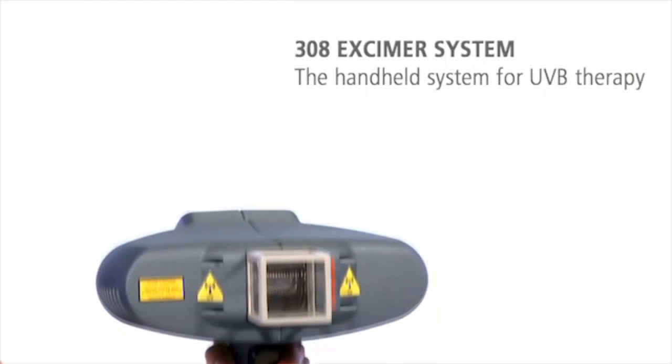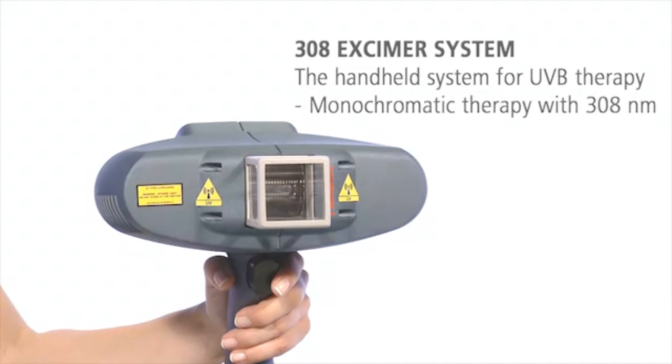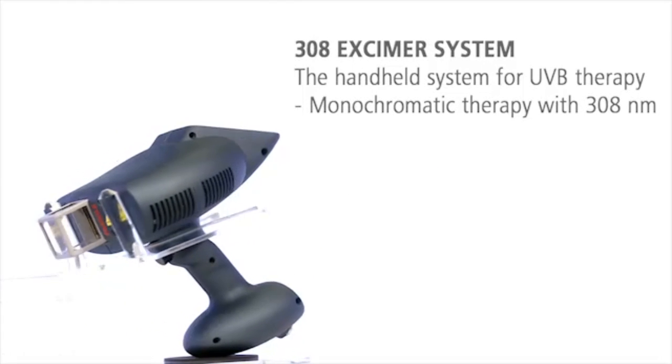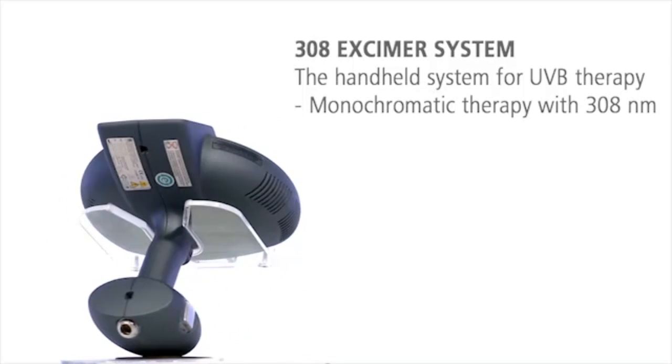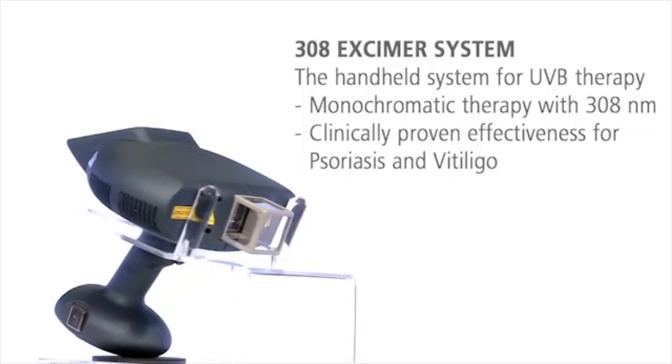The 308 Excimer System: the handy, highly effective excimer system for monochromatic UVB therapy. The revolutionary excimer technology applies the ideal wavelength of 308 nanometers. This makes the 308 Excimer System the effective and safe treatment solution for autoimmune diseases.